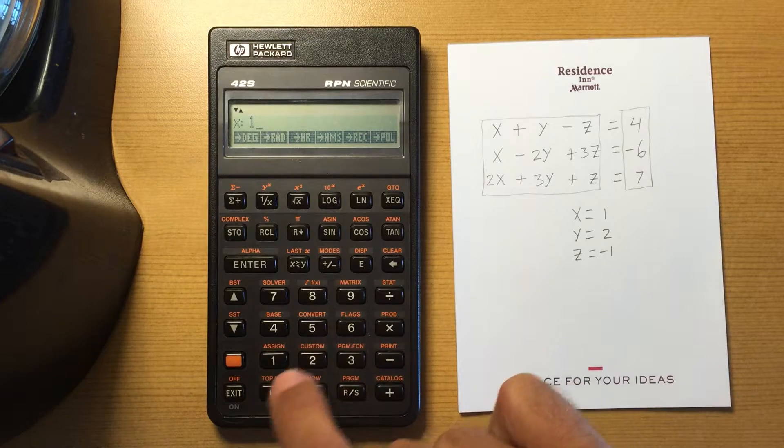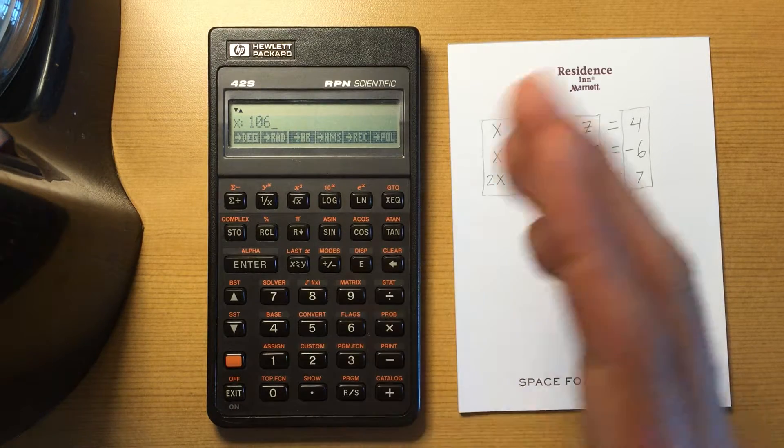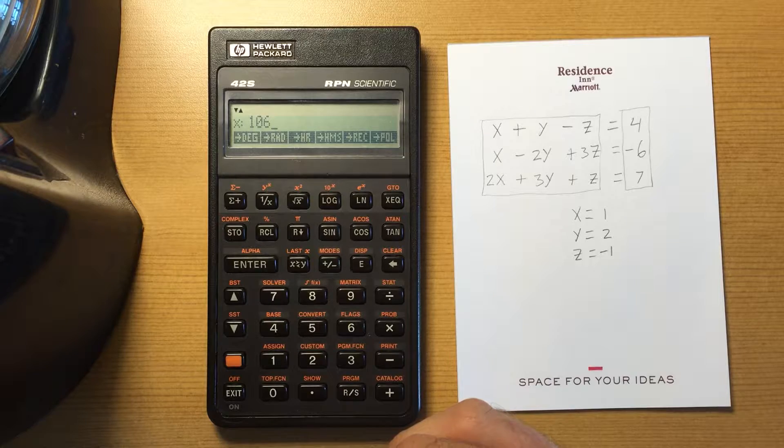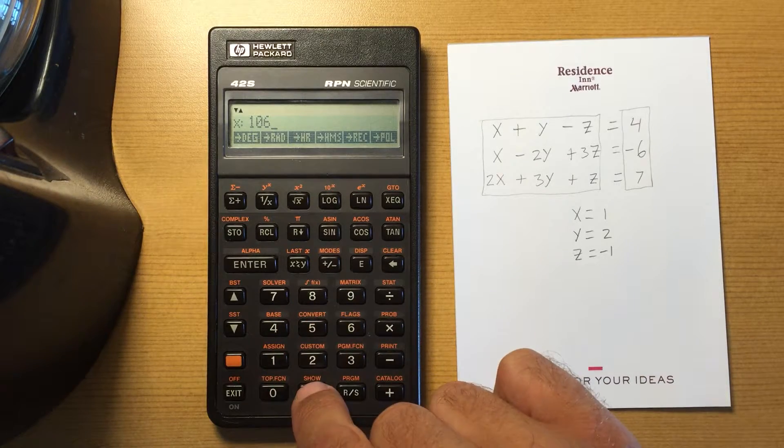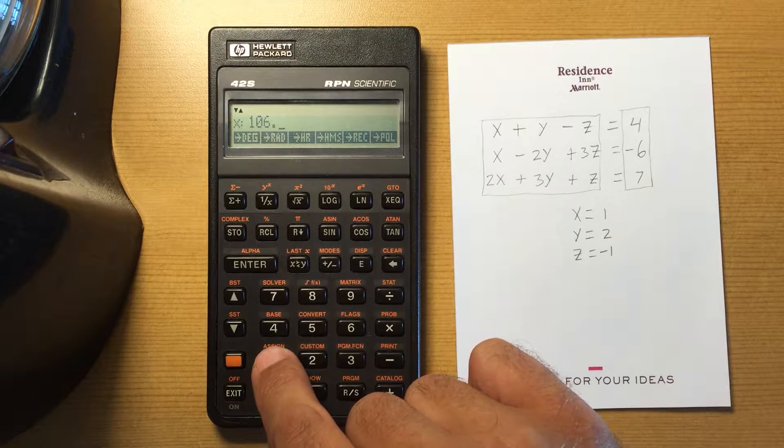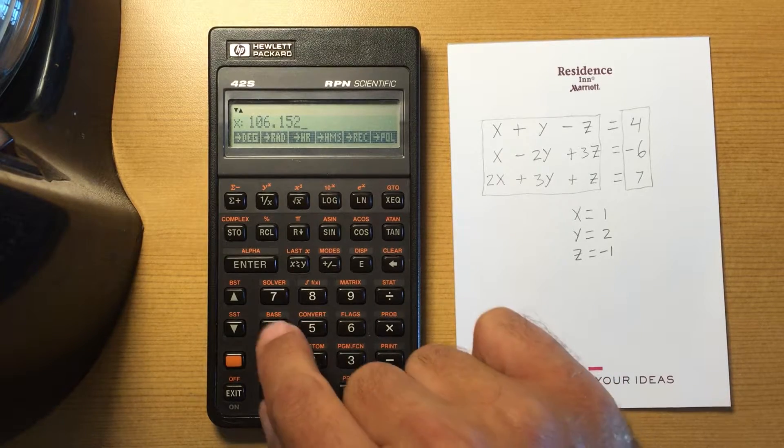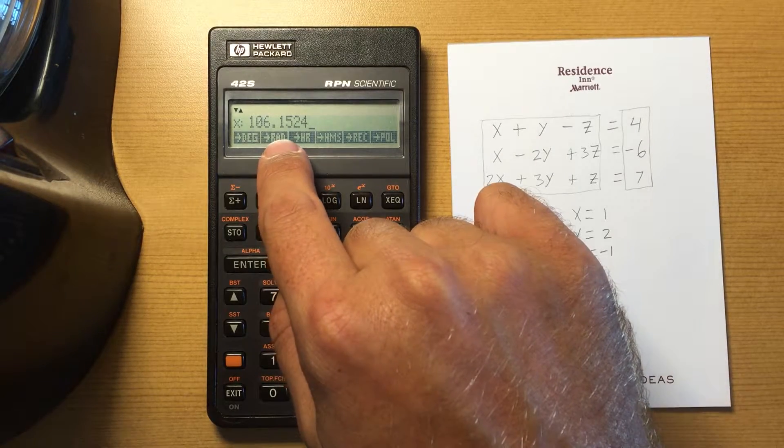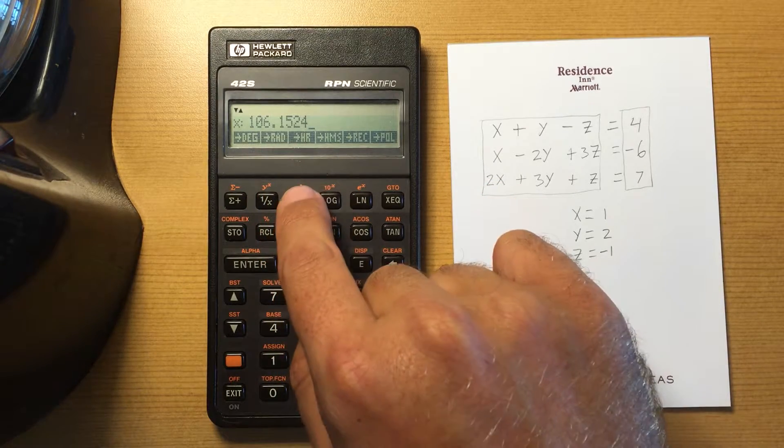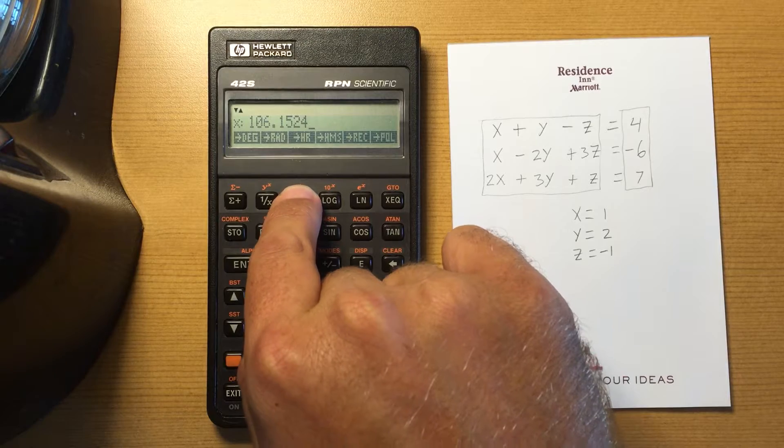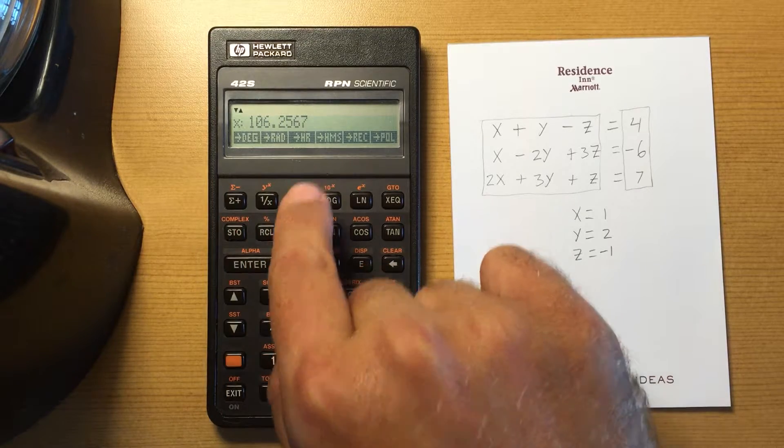Or if I have a longitude 106 degrees, 15 minutes, 24 seconds, I would enter it in as degrees, minutes, minutes, seconds, seconds, seconds, and then convert that to decimal format. It tells me what it is in decimal.